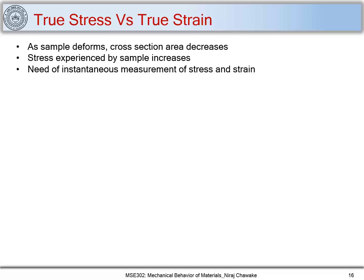We have seen earlier that as we go on increasing the deformation, the cross-sectional area decreases. We defined engineering stress as S = P/A₀. As deformation increases, delta-l increases and delta-A decreases, so the stress experienced by the material increases. Engineering stress doesn't give any idea about what stress a material is experiencing instantaneously, so we need to define and measure instantaneous stress and strain. We define the small change in strain with respect to the instantaneous length.